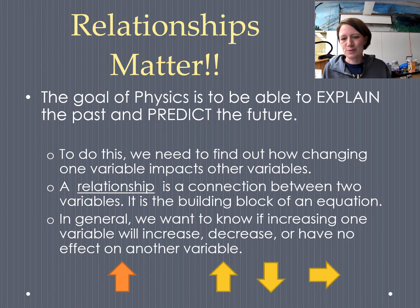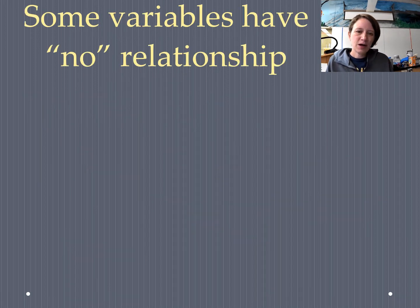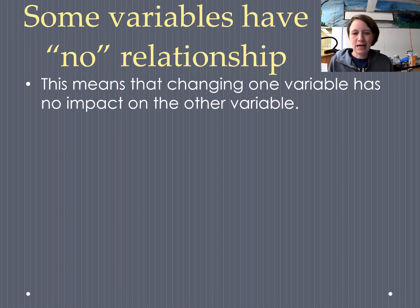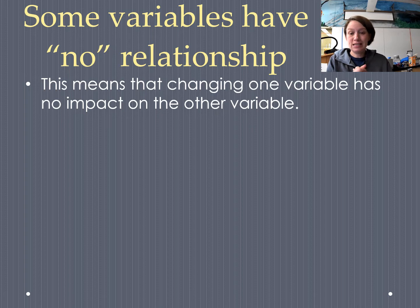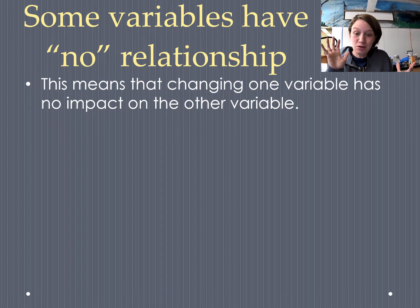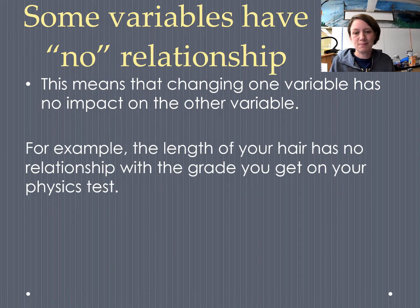The most common mathematical relationship is what's called the no relationship, which means that changing one variable did not affect some other variable. The reason this is common is because there are a lot of variables out there, and changing one thing doesn't affect everything else in the universe — it only affects a few select things that are related to it.